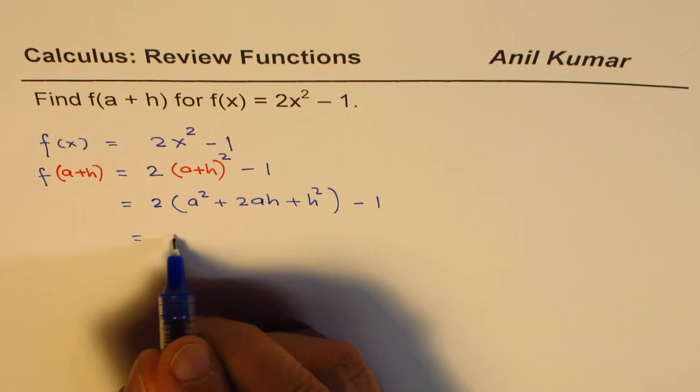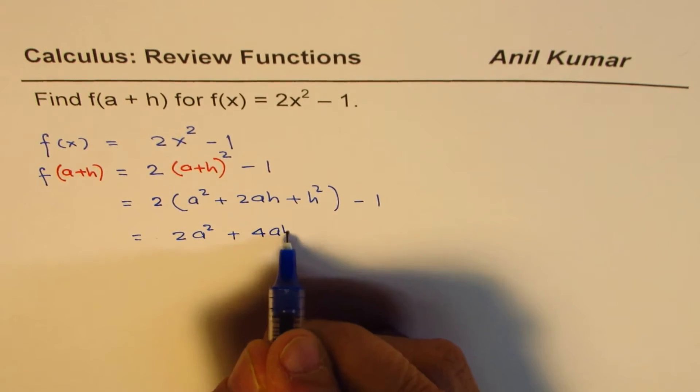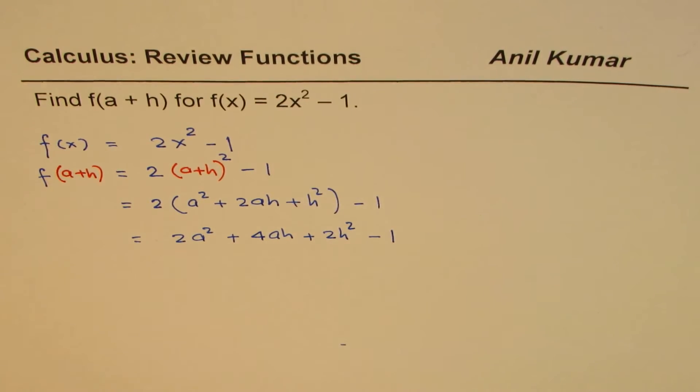You can open the bracket. So you get 2a² + 4ah + 2h² - 1. So that is the expression for f(a+h).